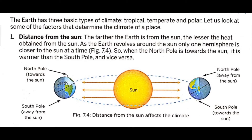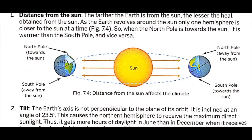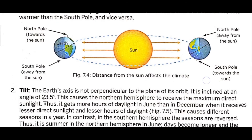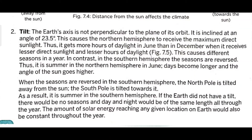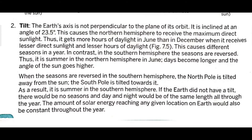As the earth revolves around the sun, only one hemisphere is closer to the sun at a time — figure 7.4. So when the North Pole is towards the sun, it is warmer than the South Pole and vice versa. From this diagram we can see how the South Pole and North Pole differ in warmth.